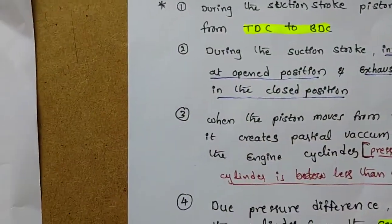Diesel engines are generally used in cars, buses, lorries, and some agricultural equipment such as water-pumping motors. These are some examples of the applications of diesel engines.